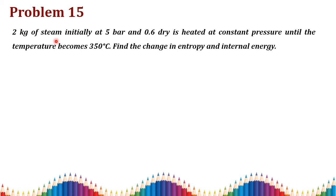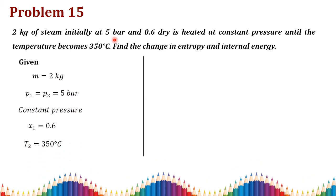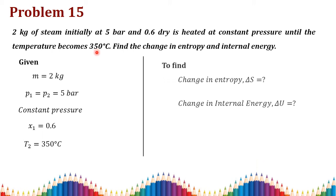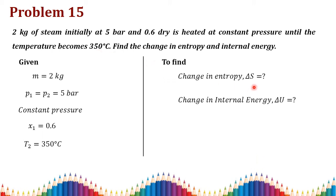Problem 15: 2 kg of steam initially at 5 bar and 0.6 dryness fraction (wet steam) is heated at constant pressure — p1 equals p2 equals 5 bar — until the temperature becomes 350°C. Find the change in entropy and internal energy, ΔS and ΔU. Since mass is given, find specific values and multiply by mass.